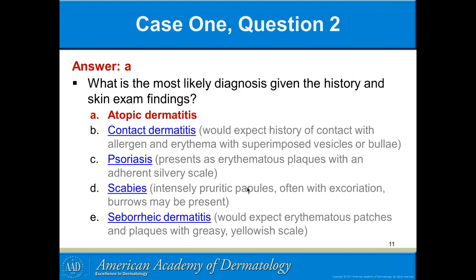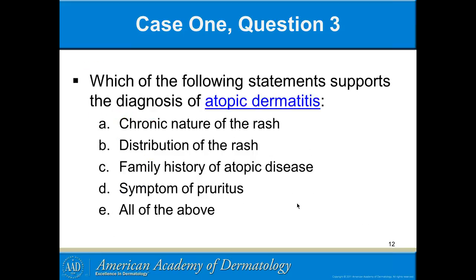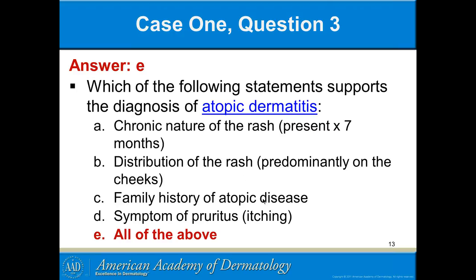Which of the following statements supports the diagnosis of atopic dermatitis? The chronic nature certainly does. Distribution — yes, they'll go into that, and distribution varies a little bit with age. Often in young children it is on the face; sometimes at the antecubital folds and behind the knees, which is more common in adolescence. Family history of atopic disease — yes. Symptoms of pruritis — yes. The correct answer is all of the above.